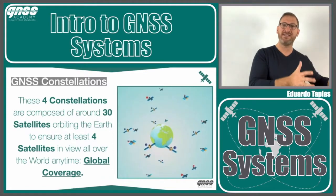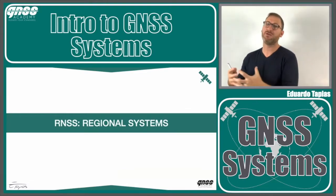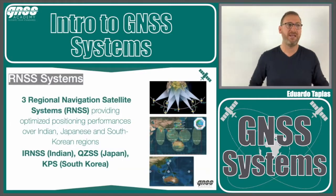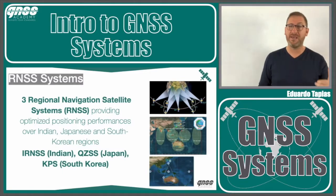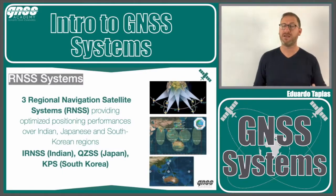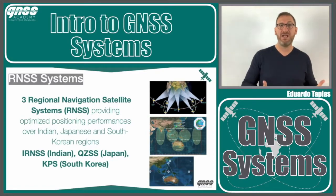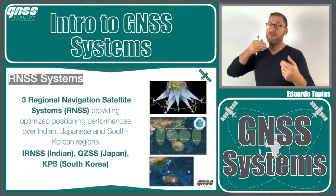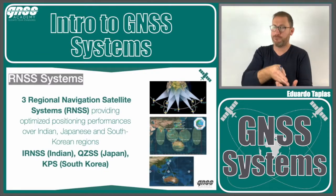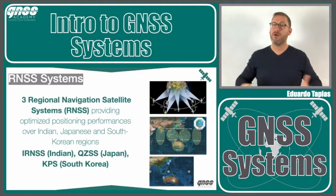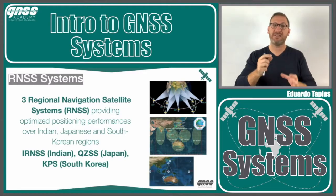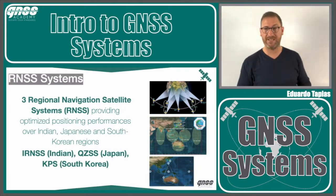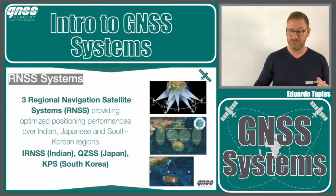Beyond global constellations, we also have regional systems. The most well-known today are the Indian IRNSS, the Japanese QZSS, and the South Korean KPS. These regional systems use satellites orbiting the Earth but focus their performance on specific areas. For example, Japan has global satellites but also additional satellites focused on Japan to provide much better local performance.